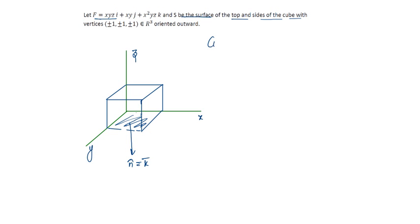Let us find curl F, which will be i, j, k, del by del x, del by del y, del by del z. F bar components are xyz, xy, x squared yz.